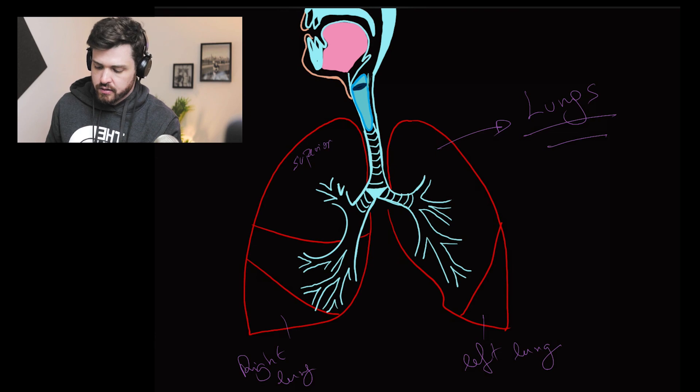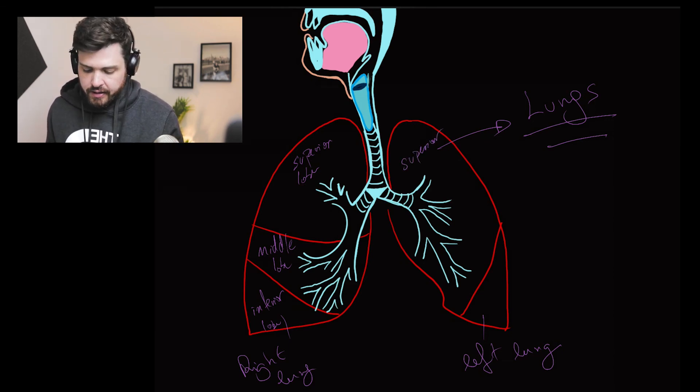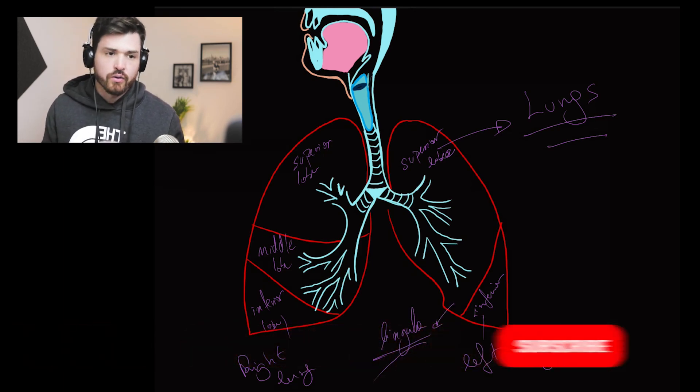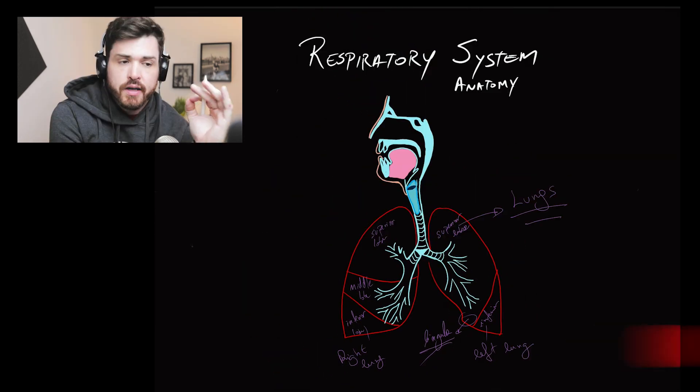Superior, middle, and inferior lobes. And here we have the lingula. So, that's the main part of the respiratory system anatomy.